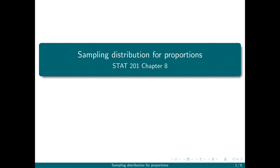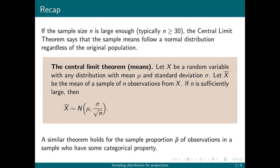In this video, we're going to talk about the sampling distribution for proportions. Recently, we talked about the sampling distribution for means. The central limit theorem tells us that if the sample size is large enough — typically we mean that n has to be at least 30 — then the sample means follow a normal distribution regardless of what the original population looks like.